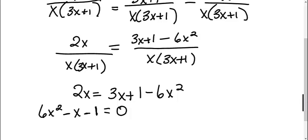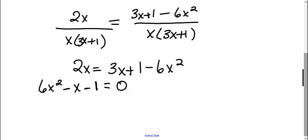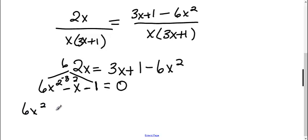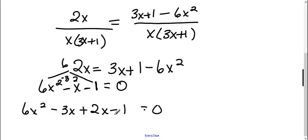Now I need to break it up into two parentheses to factor. I'm going to use my pyramid method — 6 times 1 gives me 6, and I need factors that give me negative 3, so 3 and 2. I split the middle term: 6x squared minus 3x plus 2x minus 1.